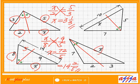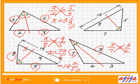What about this bottom right here? We're going to use X to 7 — or X to 3, doesn't matter. X to 7 equals 3 to 2. Cross multiplication: 2X is 21. So X is 21 divided by 2, which is 10 and a half — 10.5.